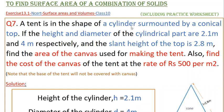A tent is in the shape of a cylinder surmounted by a conical top. If the height and diameter of the cylindrical part are 2.1 meters and 4 meters respectively, and the slant height of the top is 2.8 meters, find the area of the canvas used for making the tent. Also find the cost of the canvas of the tent at the rate of rupees 500 per meter square. Note that the base of the tent will not be covered with canvas.